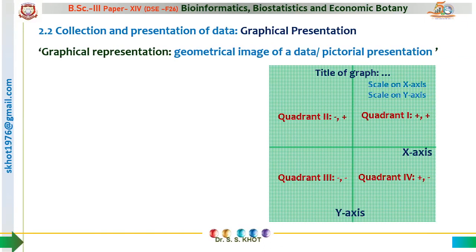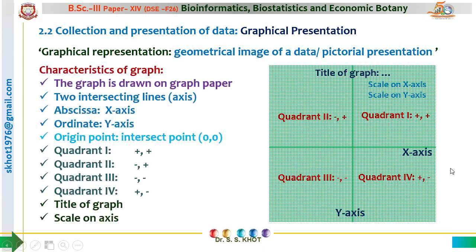A graph is a geometrical image where the data is represented in the form of a picture. The graph is divided into parts by a horizontal line and a vertical line. The horizontal line is called the X axis or abscissa, and the vertical line is called the Y axis or ordinate. The crossing point of the X and Y axes is called the origin point, representing zero values for both axes.